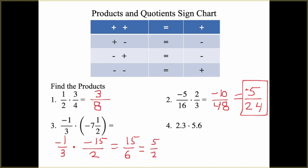You can leave it as an improper fraction if you want, or you can turn it into a mixed number. Either form will be accepted, so you can leave it as 5 halves.